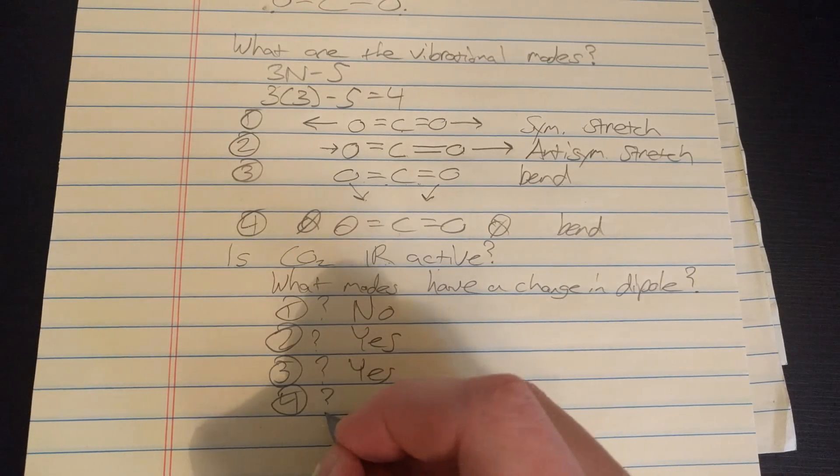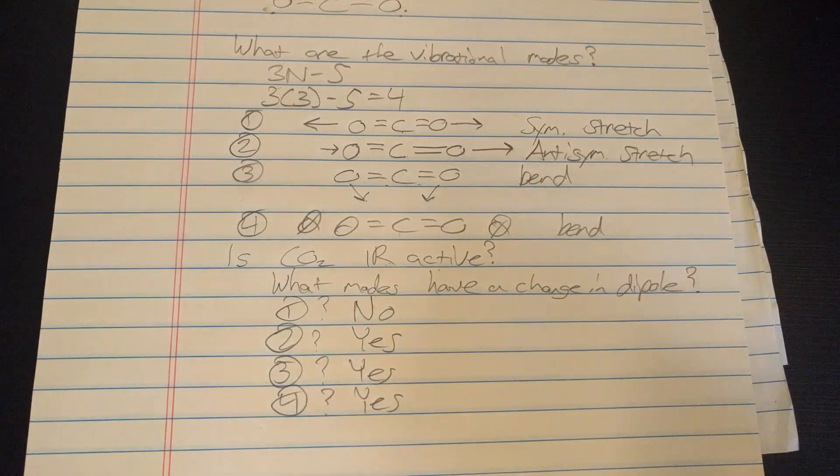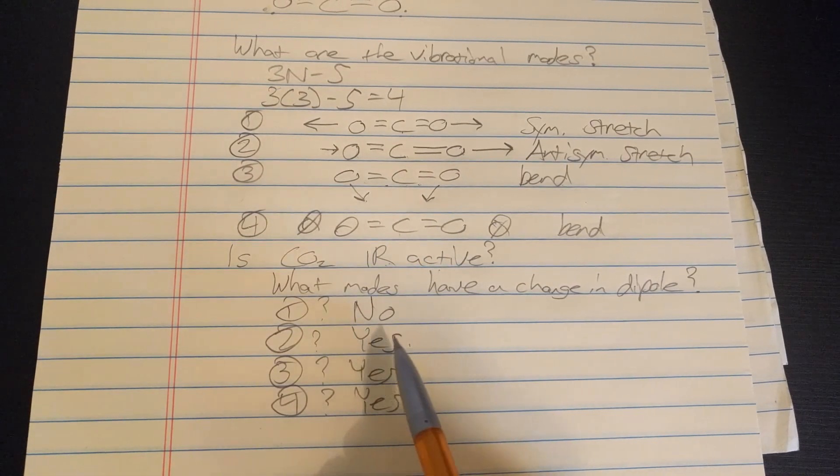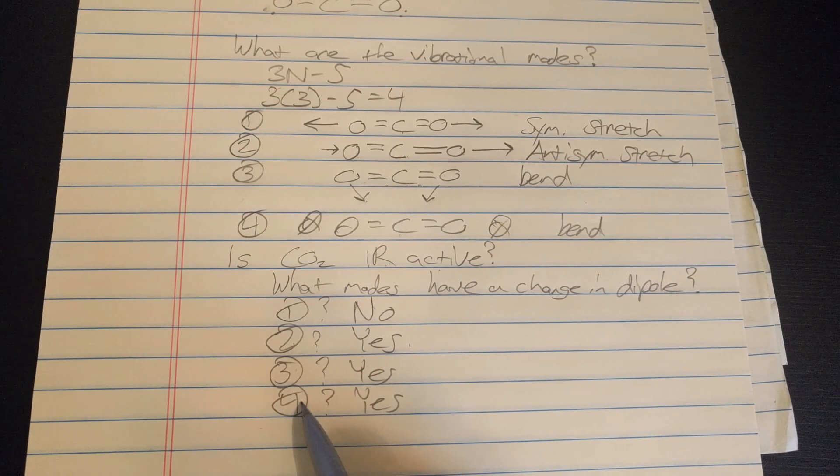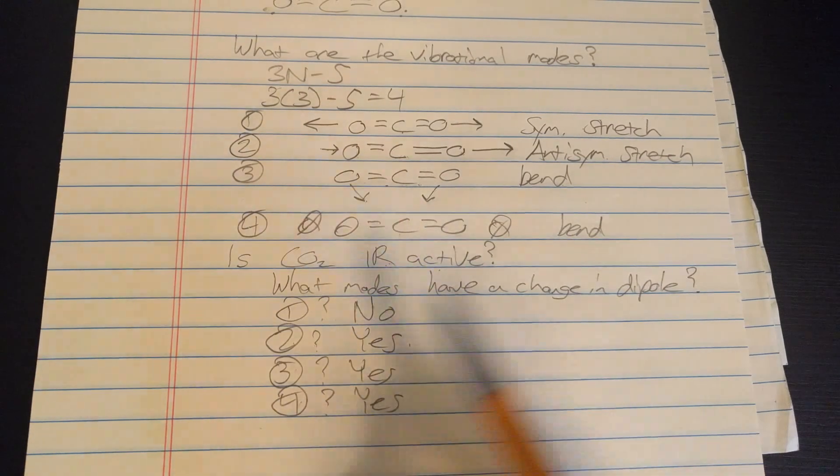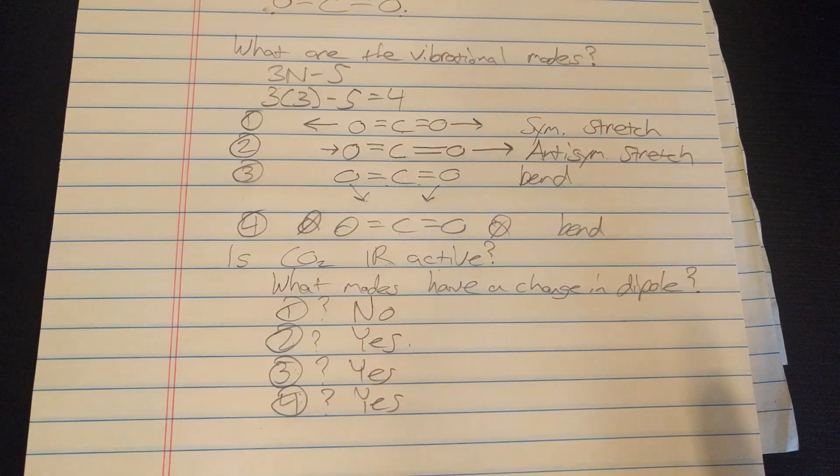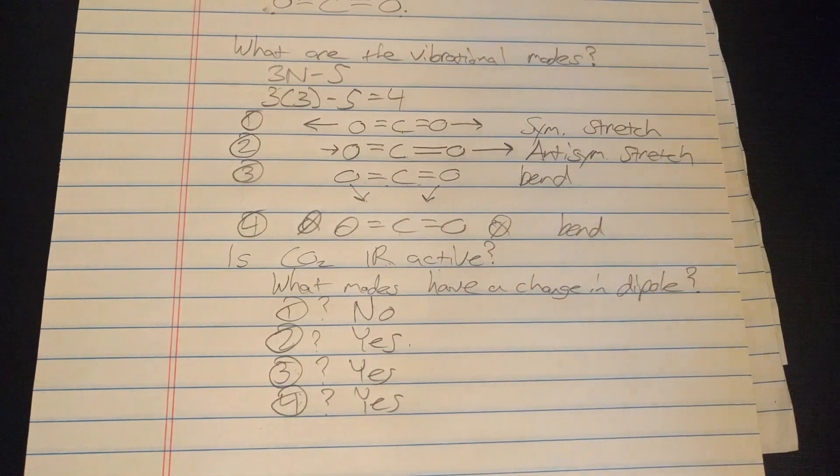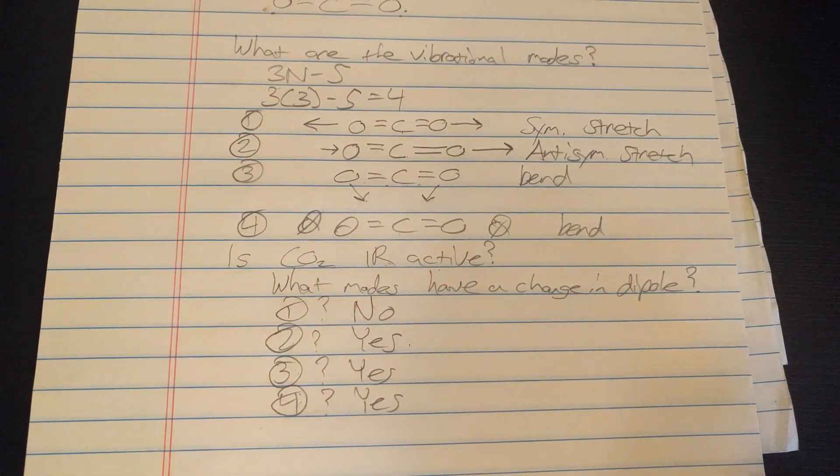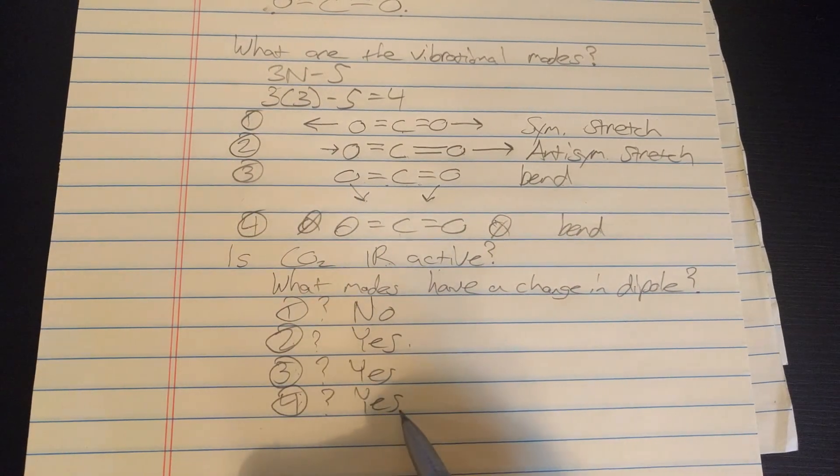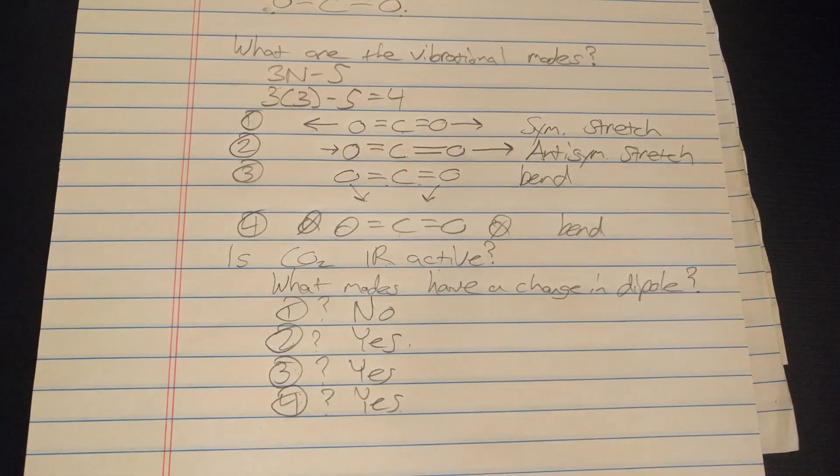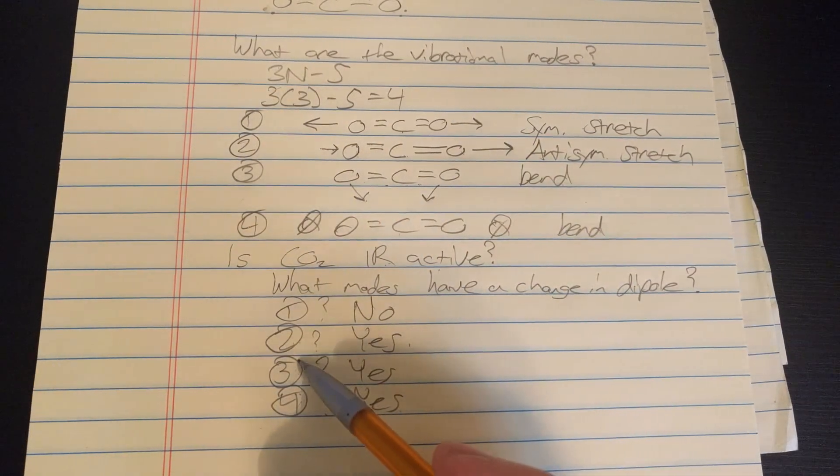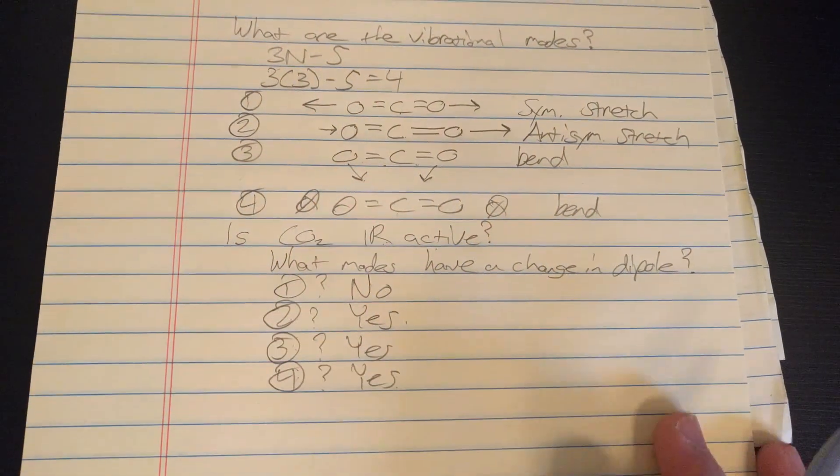Mode four? Yes, it's the same thing as case three. So we know that if we take an IR spectrum we should see three different peaks, or really two different peaks because three and four are going to show up at the same exact place, since they're pretty much the same modes just in different dimensions. So yes indeed CO2 is IR active and these are the modes of why it's active.